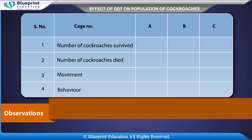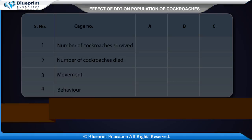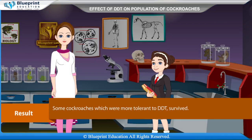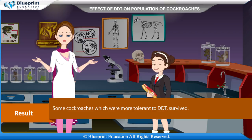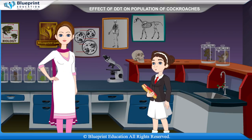Observations: Record for each cage (A, B, C): number of cockroaches survived, number of cockroaches died, movement, and behavior. Result: Some cockroaches which were more tolerant to DDT survived. Student: Thank you, ma'am. You have given great knowledge through this experiment.